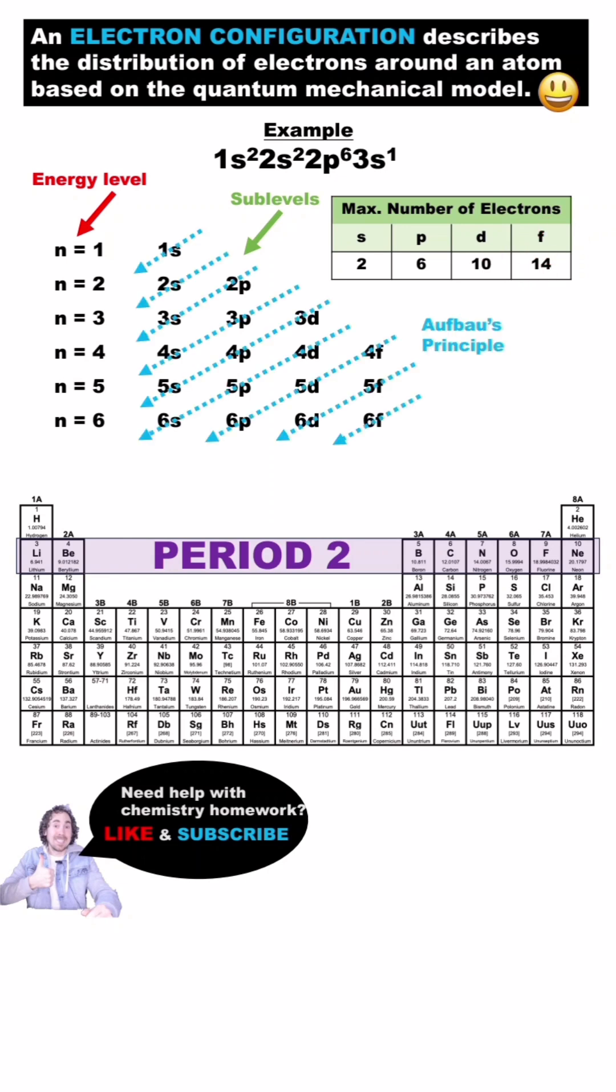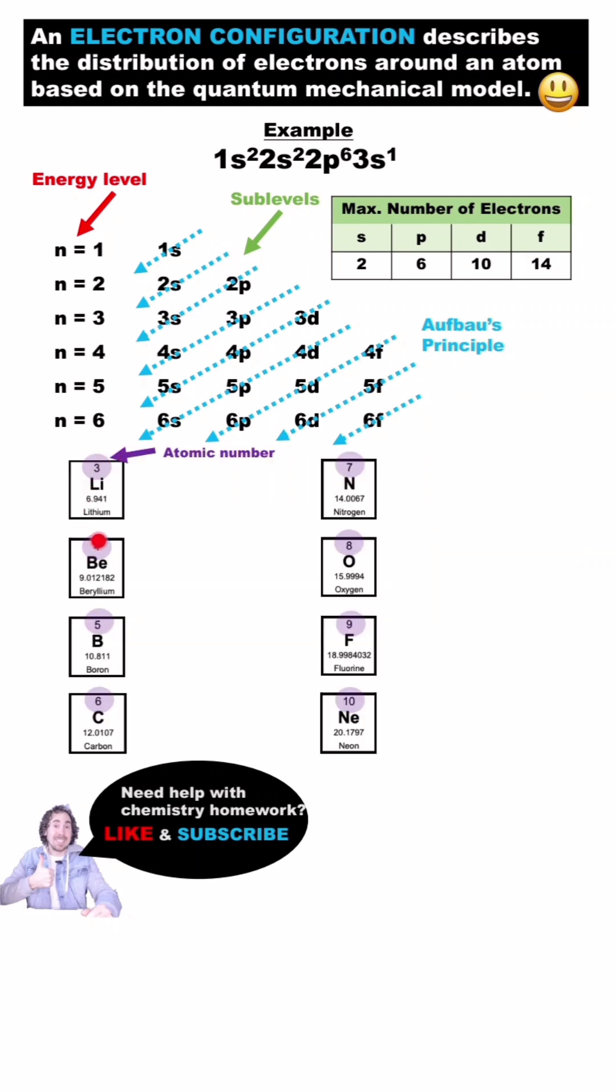Add electrons in order from lowest to highest energy. I remember the order using this tool. Follow the arrow starting at the top one and working your way down. The number of electrons is equal to the atomic number.